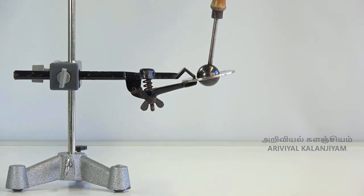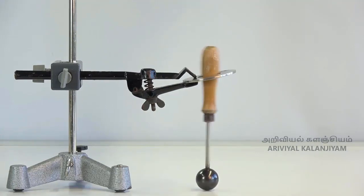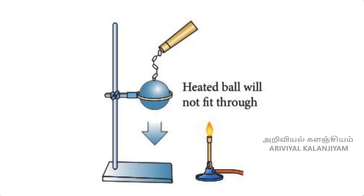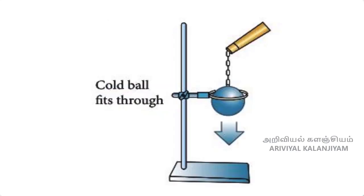After cooling down, the ball passes through the ring. By doing this experiment, we can understand that solids expand due to heat and come back to their original state if heat is removed.